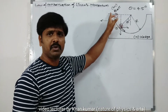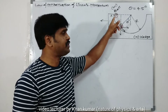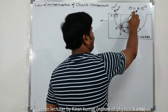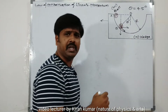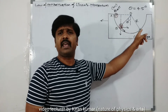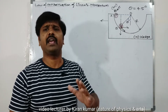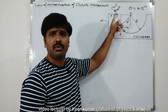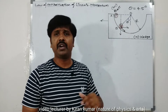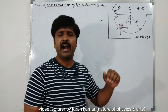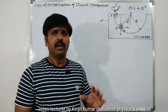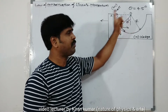The ball released from position A has potential energy because it is at the extreme position — like a simple pendulum at its fixed support. As the ball is released, potential energy gradually decreases and converts into kinetic energy. At position B, all potential energy has converted into kinetic energy. The angle theta is given as 45 degrees.